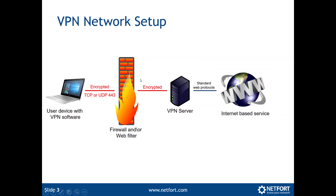A typical setup looks like this. I get on a network with my device — it could be a mobile device, a wired device, a laptop — and I have my VPN software. The VPN software will have a database of VPN servers, so a list of IP addresses. My device will connect typically over TCP or UDP port 443, because that is usually open on a firewall, and it will establish an encrypted connection to that VPN server. Once that connection is in place, I have essentially punched a hole through that firewall and can access whatever I want, because the firewall has no idea what is being carried inside this encrypted session. The VPN server then goes off and connects to whatever service I want.